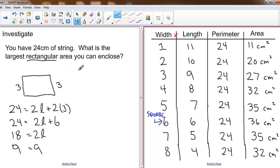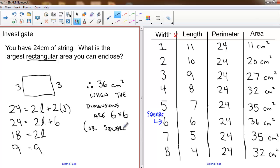So the largest rectangular area I can enclose is 36 centimeters squared, and I can do this when the dimensions are six by six, or I've made a square.